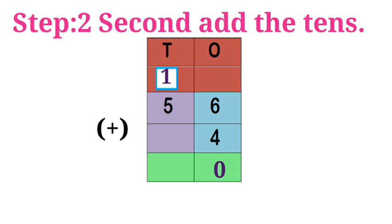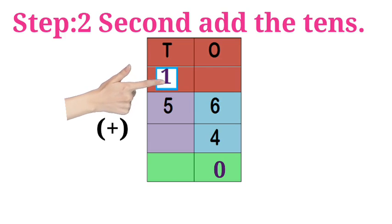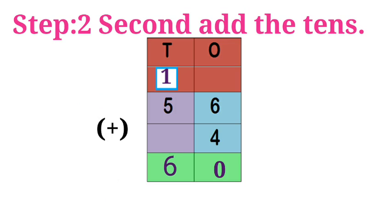Step two: second add the tens place. Five in the mind. Remaining value plus one adding. Five plus one is equal to, what is the answer? Six. The answer is six. The total sum: sixty. Did you understand students?